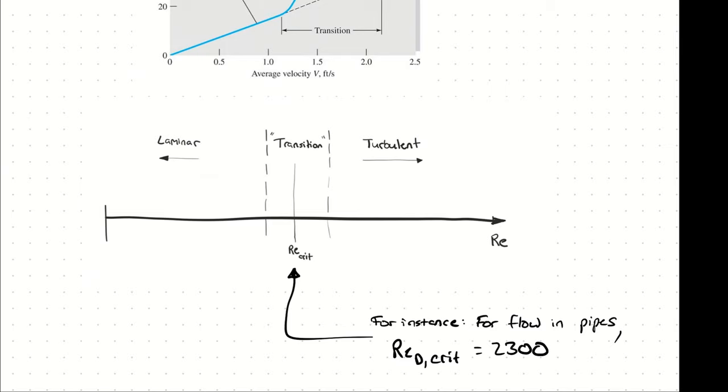For example, for flow in pipes, we use diameter as the characteristic length for our Reynolds number, and we use a critical Reynolds number of 2300. That means anything less than 2300, even 2299, is considered laminar flow. Anything greater than 2300, even 2301, is considered turbulent.